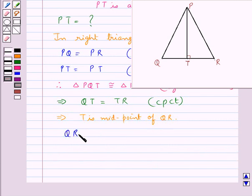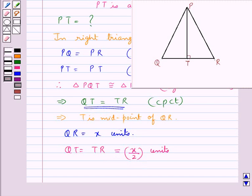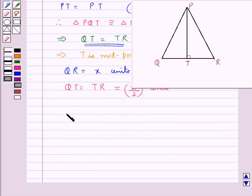Now as we are given that QR = x units and QT = TR, QT = TR would be equal to x/2 units. Now if you consider the right triangle PQT, in this by the Pythagoras theorem...